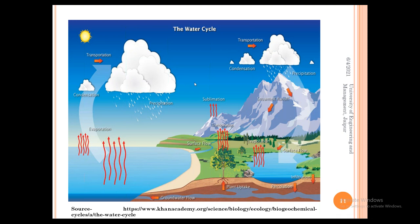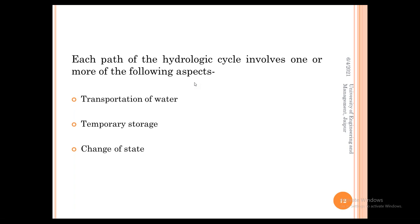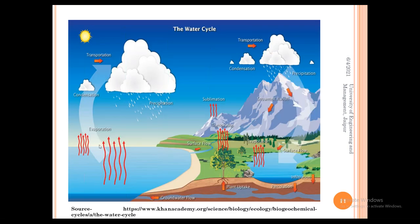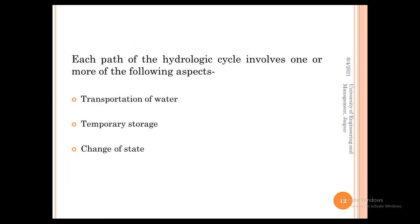The paths in the hydrologic cycle generally involve one, two, or three aspects simultaneously. The three aspects are: transportation of water; temporary storage — water temporarily stored in ditches, potholes, or depressions in land masses; and change of state — water continuously changing from liquid to gas and back from gas to liquid.